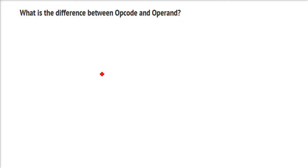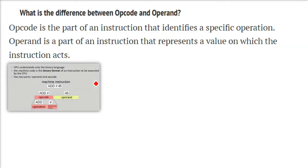What is the difference between op code and operand? So let me show you diagrammatically first.